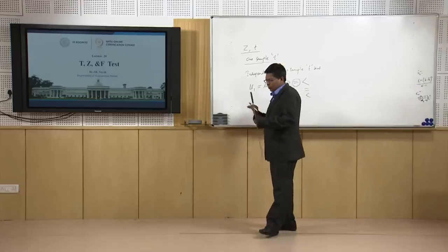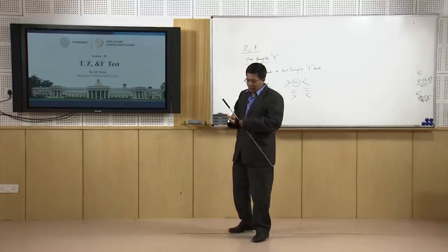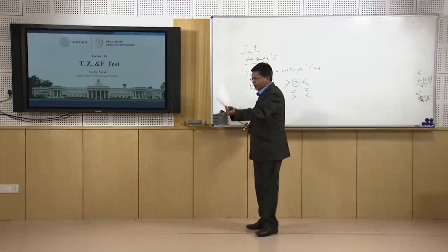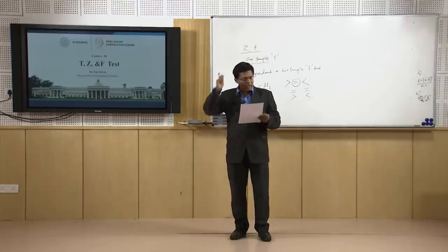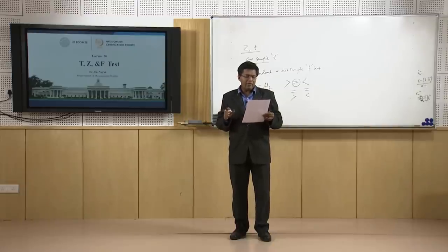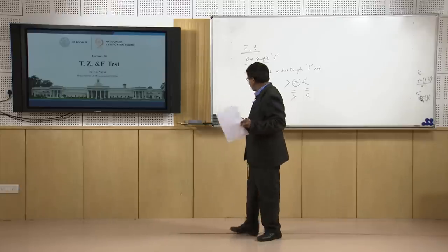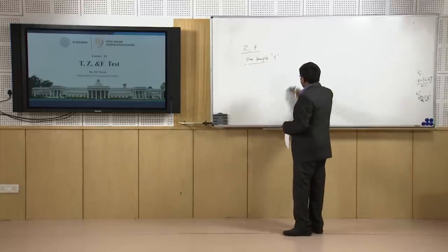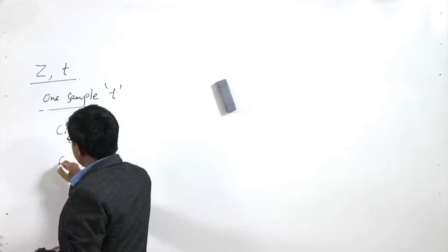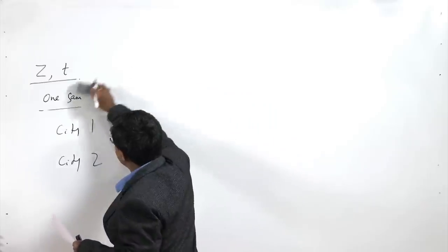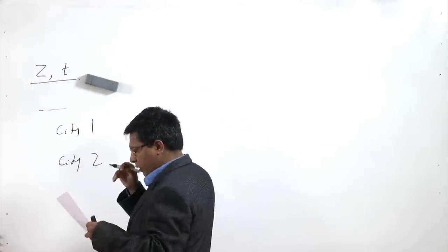Now the question is whether mu1 equals mu2. Let us look at a problem. A manpower development company is trying to determine whether the hourly wages of workers in two different cities — let us call them Apex and Eden — are the same or different. The hourly earnings given are $8.95 for Apex and $9.10 for Eden. This question is taken from the Levin and Rubin book.